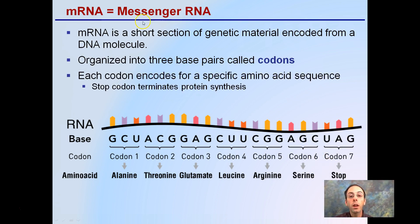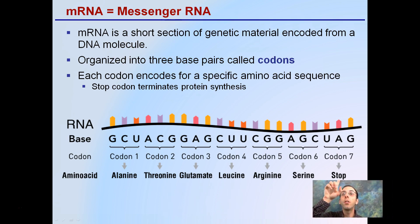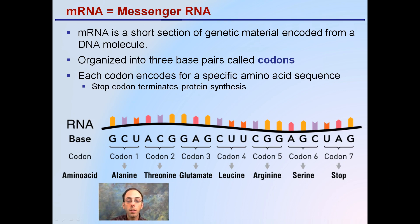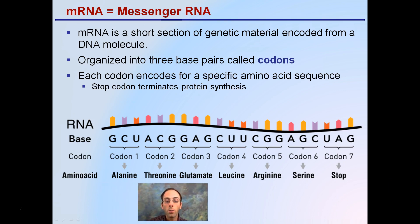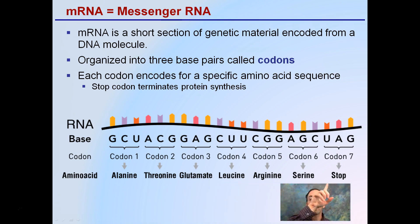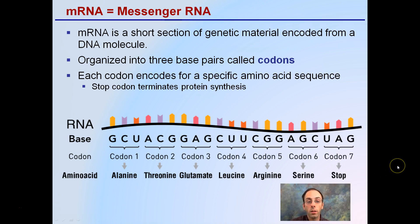Looking at mRNA in more detail — mRNA stands for messenger RNA. It's a short section of genetic material encoded from a DNA molecule, organized into three base pairs called codons. We can see that there are three base pairs — those are the codons — working their way down all the way to the end. Each of these three base pairs is a codon. At the very end, it says a stop codon. This stop codon is important because each codon encodes for a specific amino acid sequence. Only the stop codon does not encode for an amino acid sequence — it actually terminates protein synthesis, saying stop or end. It is still a three base pair and it's still a codon.